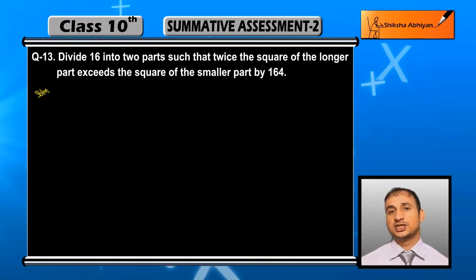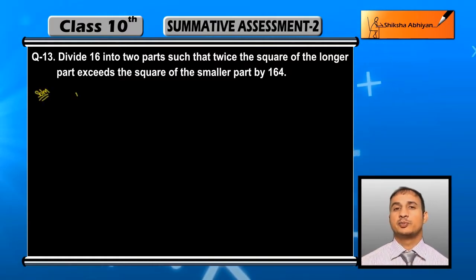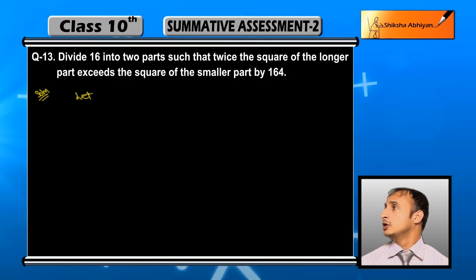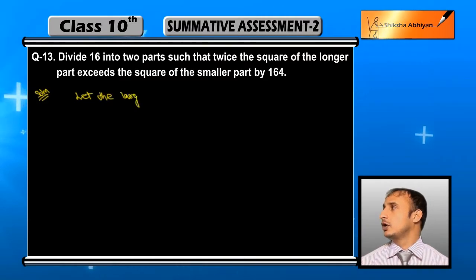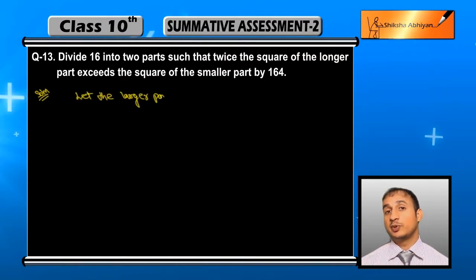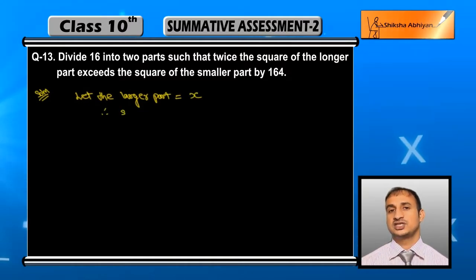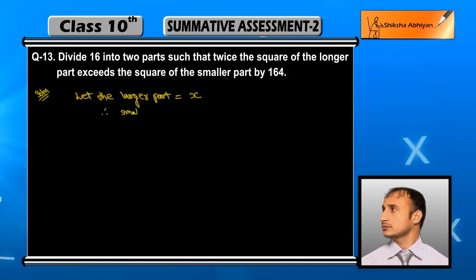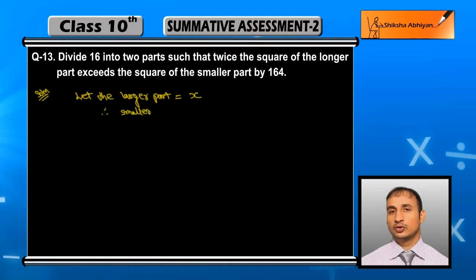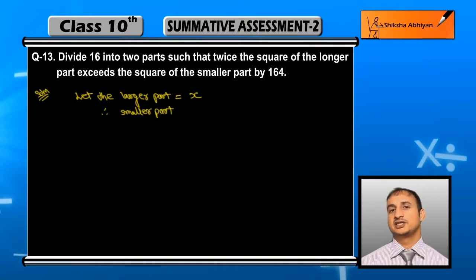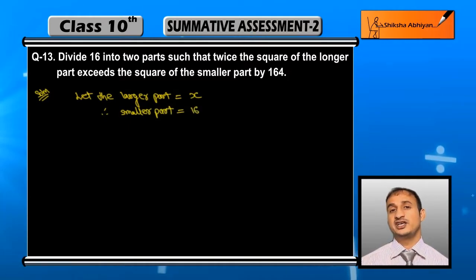यहाँ पर मैं larger part और smaller part को लेता हूँ। Let the larger part be equal to x, therefore smaller part कितना होगा — 16 minus x, क्योंकि दोनों का sum 16 ही होगा। एक को x, दूसरे को 16 minus x लेंगे; second को y नहीं मानेंगे क्योंकि तब 2 variables हो जाएंगे।